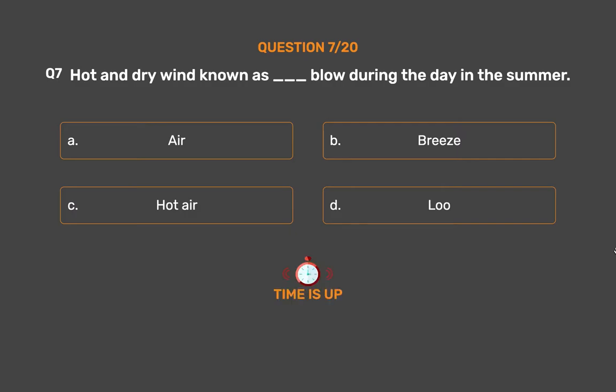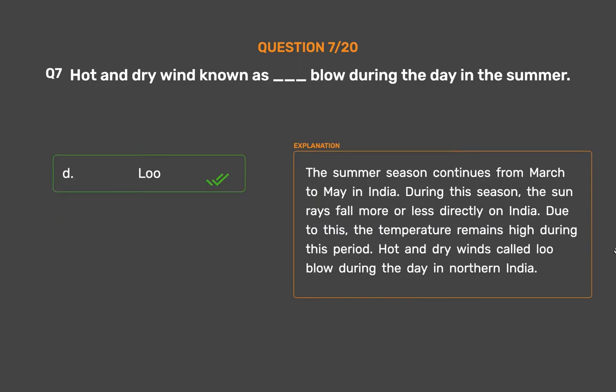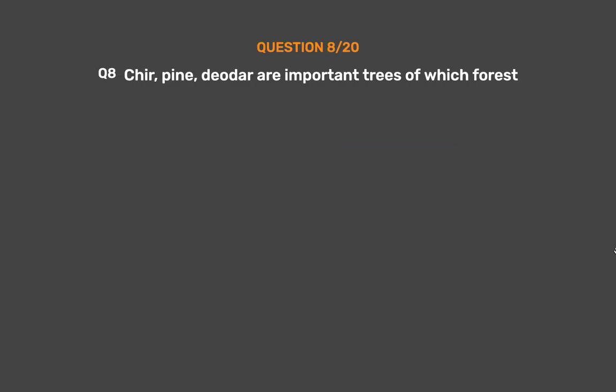The correct answer is Option D: Loo. The summer season continues from March to May in India. During this season, the sun rays fall more or less directly on India. Due to this, the temperature remains high during this period. Hot and dry winds called Loo blow during the day in northern India.